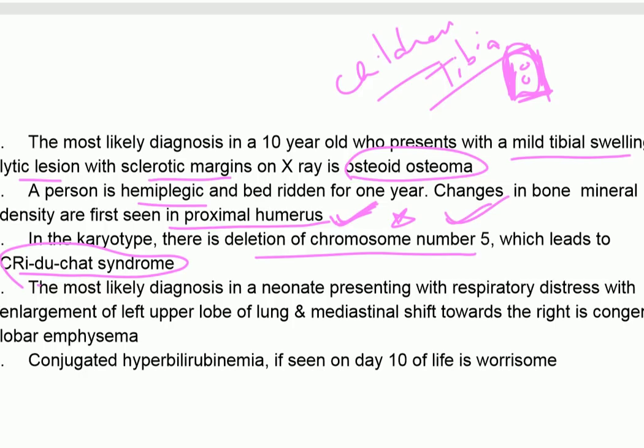In karyotype analysis, deletion of chromosome number five leads to Cri-du-chat syndrome. The most likely diagnosis in a neonate presenting with respiratory distress, enlargement of the left upper lobe of the lung, and mediastinal shift to the right is congenital lobar emphysema.